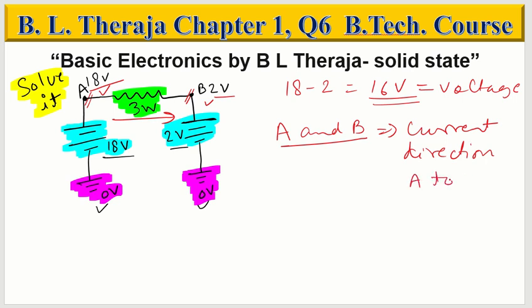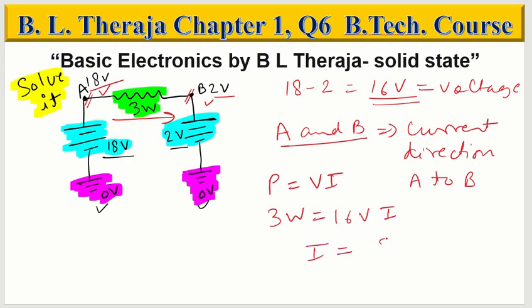The question says: calculate the magnitude of the current from A to B through the resistor — this 3W resistor, which may be a bulb or anything else. For this you use the formula P = VI. Now what is V here? They have given 3W as the power and the voltage is 16V. So I = P/V = 3 divided by 16.